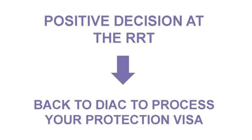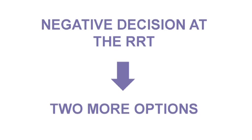If the Refugee Review Tribunal gives you a positive decision, they will send your case back to DIAC to process and grant you a protection visa — the RRT cannot actually grant you this visa themselves. If the Refugee Review Tribunal gives you a negative decision, you may have further options at the Federal Magistrates Court or with the Minister for Immigration and Citizenship. Let's look at those options now.